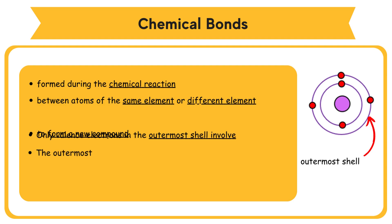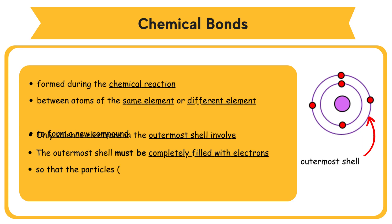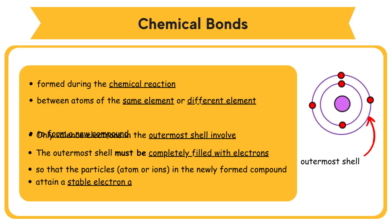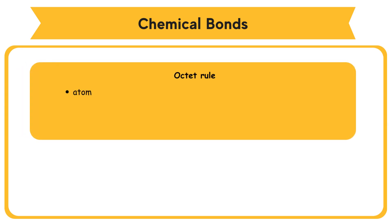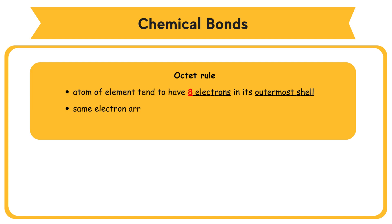The outermost shell of each particle must be completely filled with electrons so that the particles — atoms or ions — in the newly formed compound attain a stable electron arrangement: duplet or octet. The octet rule states that an atom of an element tends to have eight electrons in its outermost shell, giving it the same electronic configuration as an inert gas.